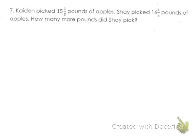Taking a look at question number 7 from the subtracting fractions and mixed numbers practice, it says that Caden picked 15 and a third pounds of apples. Shea picked 16 and a quarter pounds of apples. How many more pounds did Shea pick?